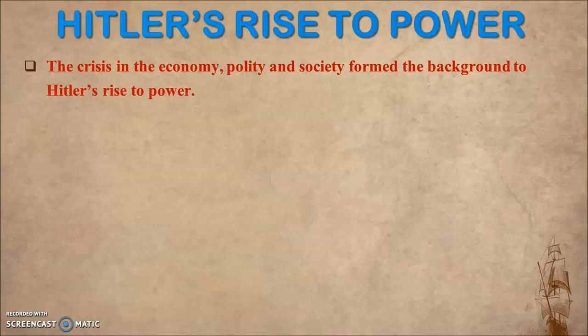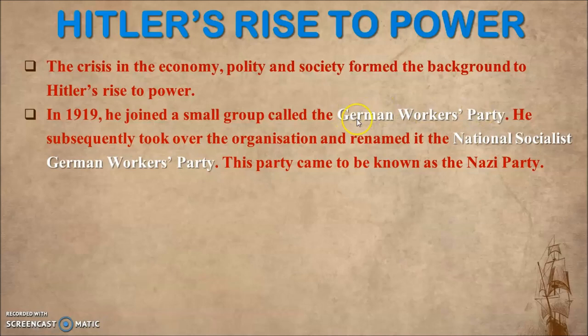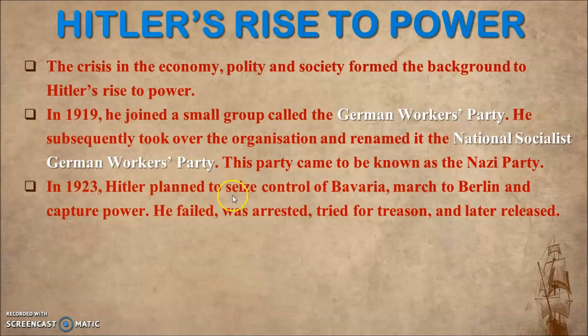The crisis of 1923 discussed in Part 1, and the Great Depression of 1929 — these crises in economy, politics, and society formed the background to Hitler's rise to power. In 1919, he joined a small group called the German Workers Party. He subsequently took over the organization and renamed it the National Socialist German Workers Party, which later came to be known as the Nazi Party.